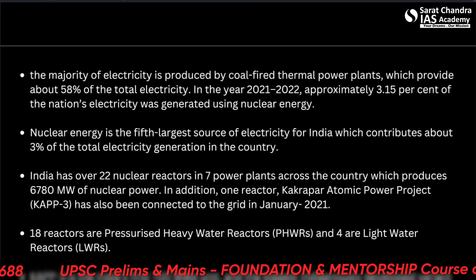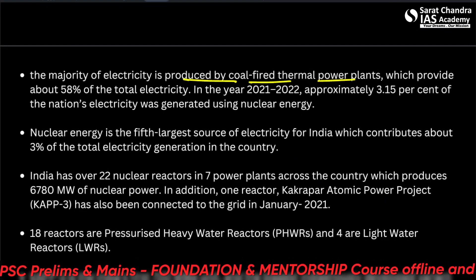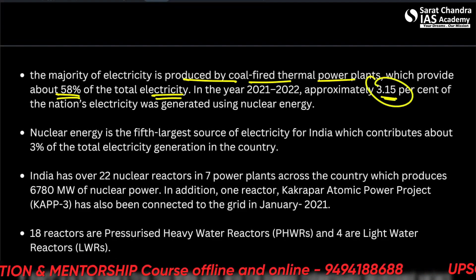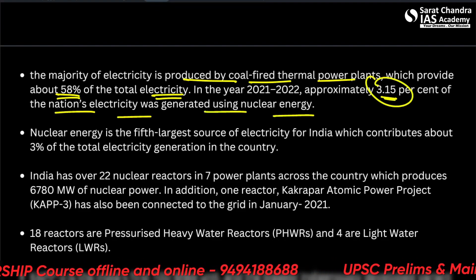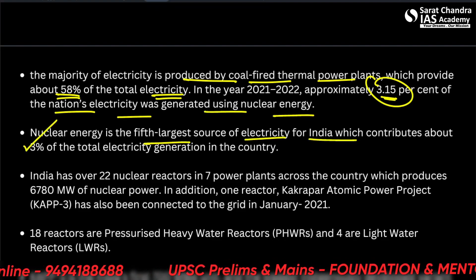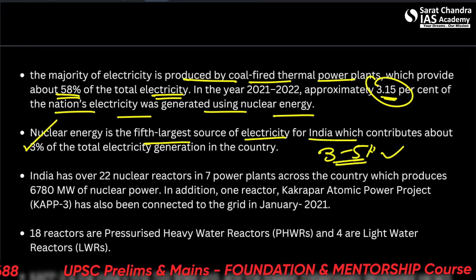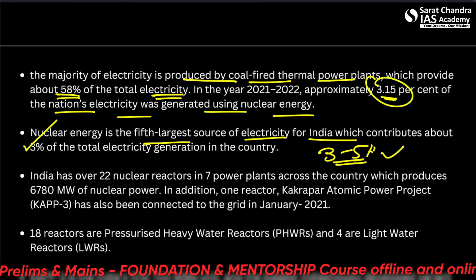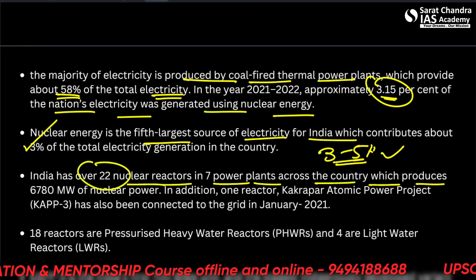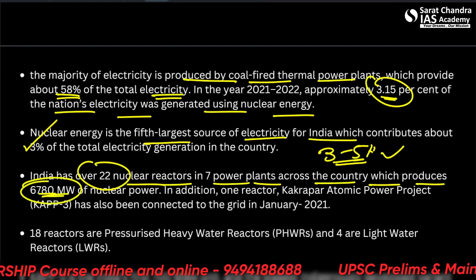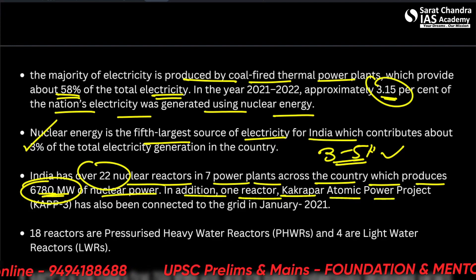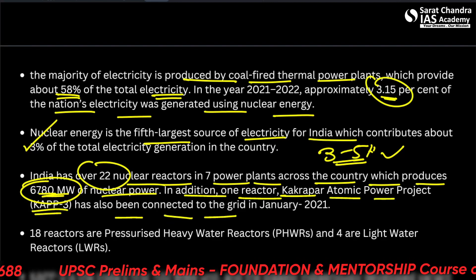In India, the majority of electricity is produced by coal-fired thermal power plants, which provide about 58% of the total electricity. Approximately only 3.15% of the nation's electricity is generated using nuclear energy. Nuclear energy is the fifth largest source of electricity in India. India has over 22 nuclear reactors in several power plants across the country, producing 6,780 megawatts (six gigawatts) of nuclear power. One reactor — the Kalpakkam Atomic Power Project (KPP-3) — was also connected to the grid in January 2021.